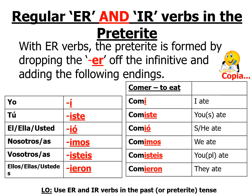Now I'll do it with the example verb. Escucha, repite. Comí, comiste, comió. Comimos, comisteis, comieron. Pause the video and copy the text and the tables into your exercise books. Be sure to do the endings in a different colour or highlight so they stand out.